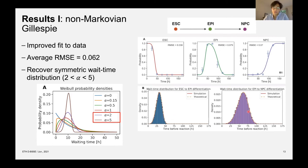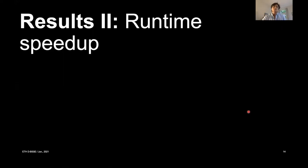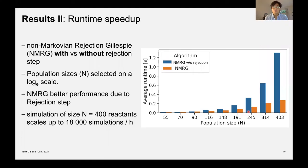So that all worked out very well and now we want to see if our algorithm is still fast. So for runtime speedup we are comparing the non-Markovian rejection Gillespie, so the approach we developed, against the non-Markovian Gillespie algorithm without the rejection step. So this is basically how powerful the rejection step can be.